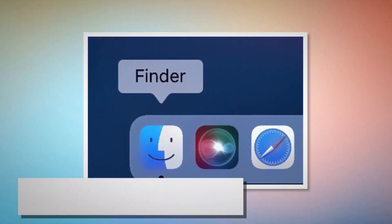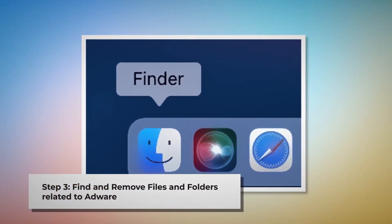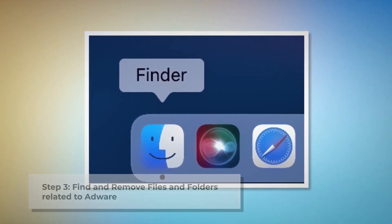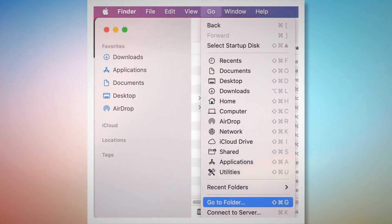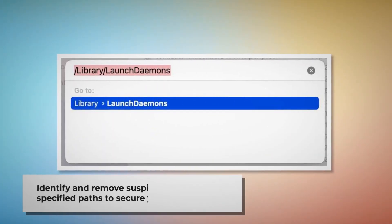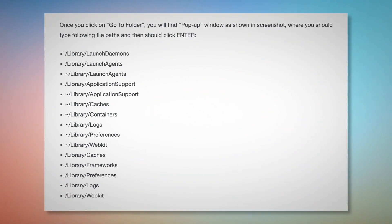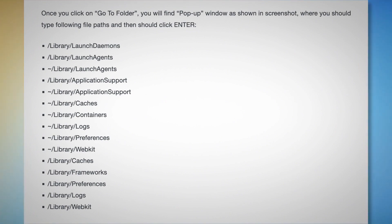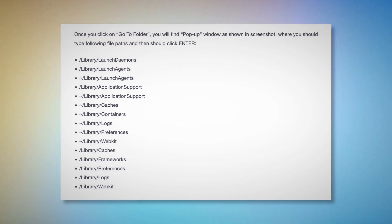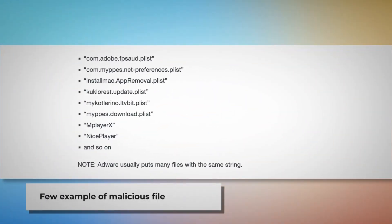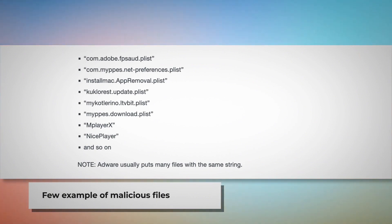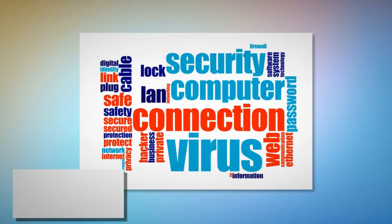Step three: find and remove files and folders related to adware. Make sure you are in the Finder folder. Click on Go at the top menu bar and then Go to Folder. In the pop-up window, type file paths such as Library/LaunchDaemons, Library/LaunchAgents, Library/Application Support, and so on. Look for suspicious or malicious files and move them to Trash. Note that adware usually puts many files with the same string.